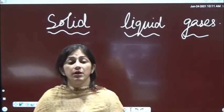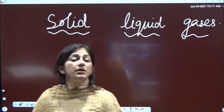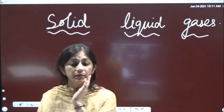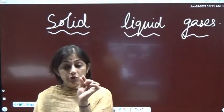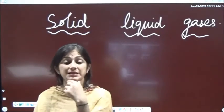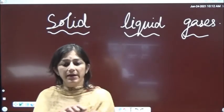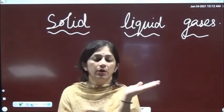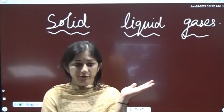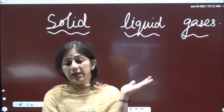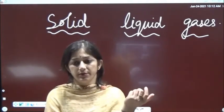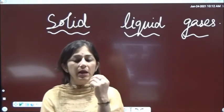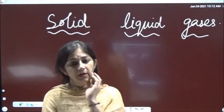Volume is fixed but shape depends upon the container in which the liquid is kept - it takes the shape of that container. Clear? Also, let's talk about forces of attraction. Liquid flows because the forces of attraction between its particles are a little bit weak as compared to solids. Such substances which have the property of flowing are called fluids. You know this thing - they are called fluids.